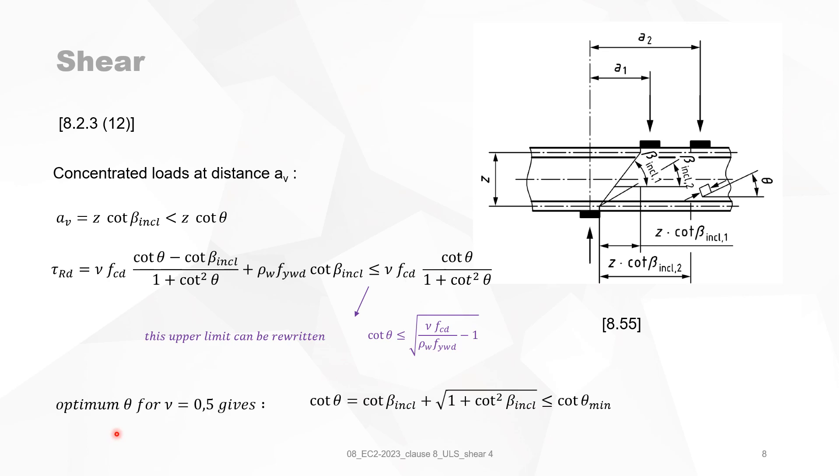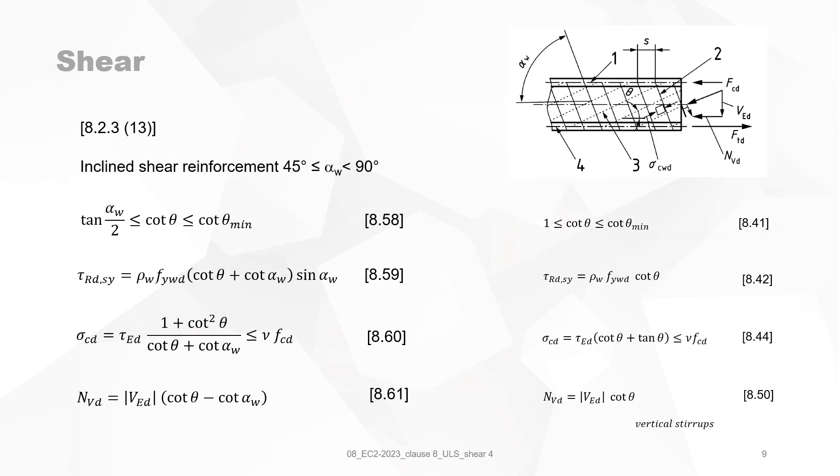You can now of course also optimize the angle of the compression field theta. For nu equals 0.5 you can have an optimization if you take cotangent theta equal to the expression as it is in here. Which is of course a function of the beta inclination. So for each position of the concentrated load within the vicinity of a support, you will have another optimum angle of the compression field.